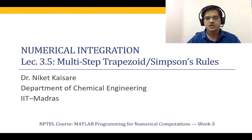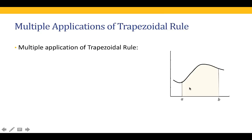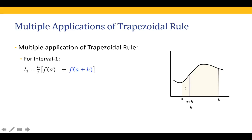In today's lecture we are going to cover multiple applications of the trapezoidal rule to find the area under a curve. As we recall, integration is finding the area under the curve f(x) between points a and b. We applied the trapezoidal rule to calculate this area, but the errors can be quite high with a single application. Instead, we can divide the entire region into multiple intervals and calculate the area using the trapezoidal rule for each interval, then sum them all up to get the net area.